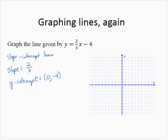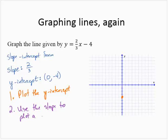So to graph this line, what we can do is plot the y-intercept. So (0, negative 4), assuming a standard scale, we have (0, negative 4). And then second, use the slope to plot a second point on the line.